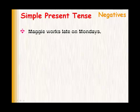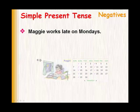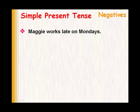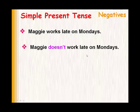Another example: Maggie works late on Mondays. If we had to do the negative, we would say Maggie doesn't work late on Mondays. Doesn't goes before the main verb.